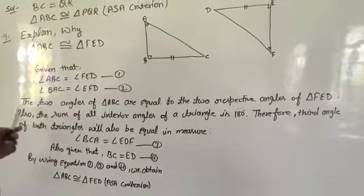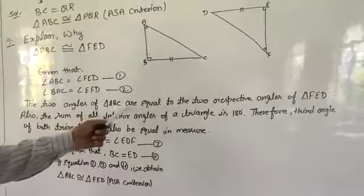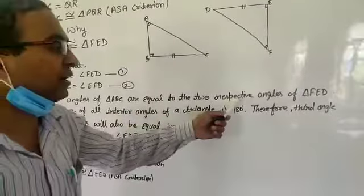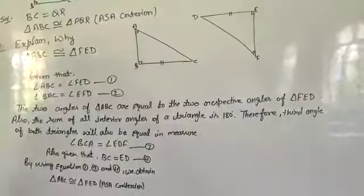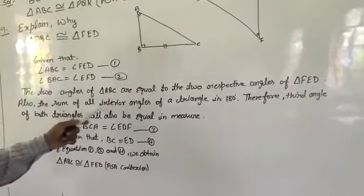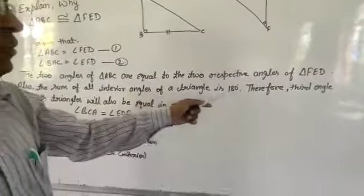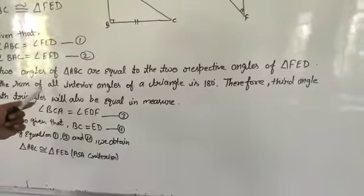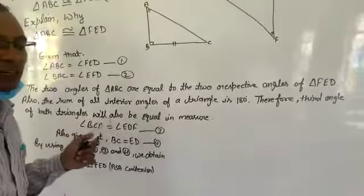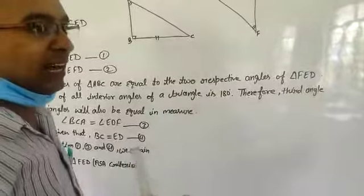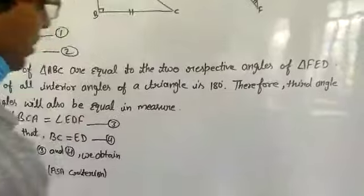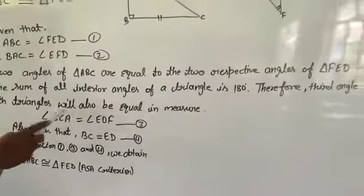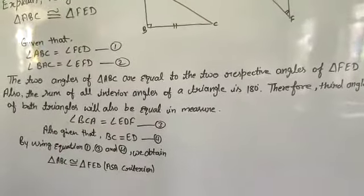The two angles of triangle ABC are equal to the two respective angles of triangle FED. Also, the sum of all interior angles of a triangle is 180 degrees. Since two angles are given, we can find the third angle. Therefore, the third angle of both triangles will also be equal in measure.